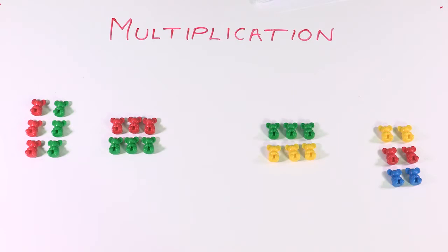On our board, you can see that our first diagram has two groups of three bears. Students need to be convinced that two groups of three bears is the same as our second diagram, which shows three groups of two bears.